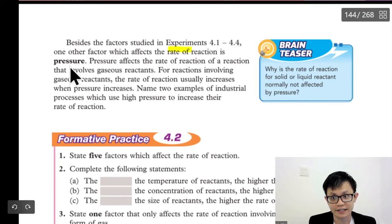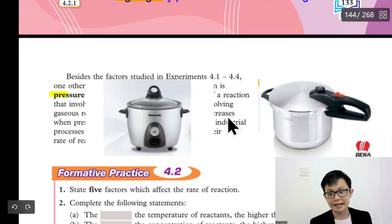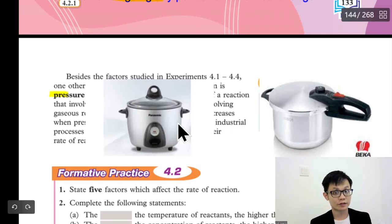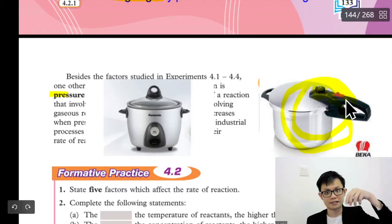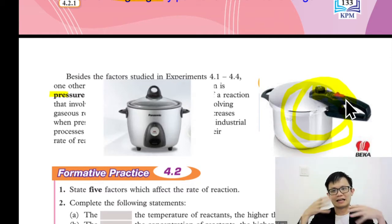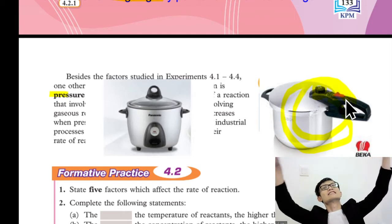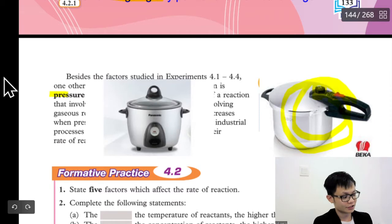One factor we didn't do an experiment on is pressure. The higher the pressure, the greater the rate of reaction. Have you ever seen a pressure cooker? Here we can see two cookers — a normal cooker and a pressure cooker. The pressure cooker will cook faster because when you close it, the gas cannot come out, so pressure builds up inside. That's high pressure, so it cooks faster. The normal cooker is slower because it has lower pressure.